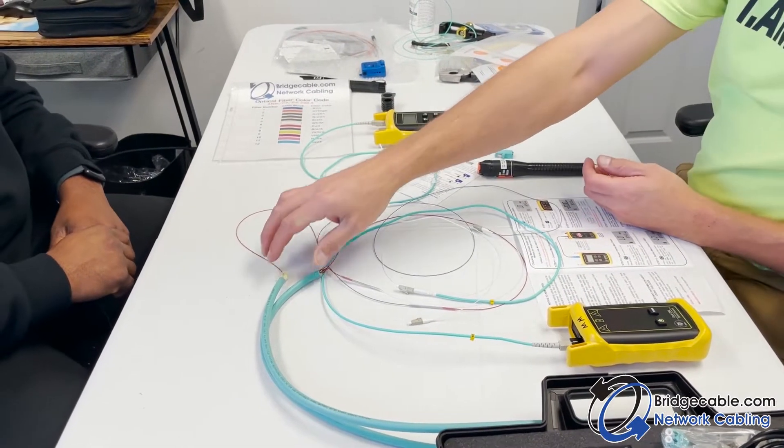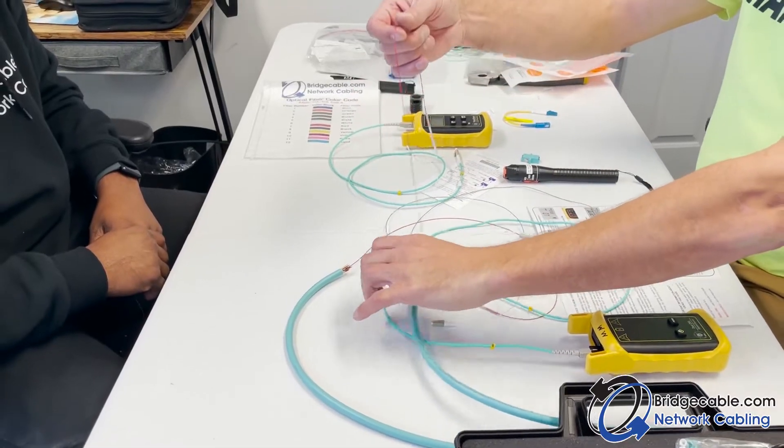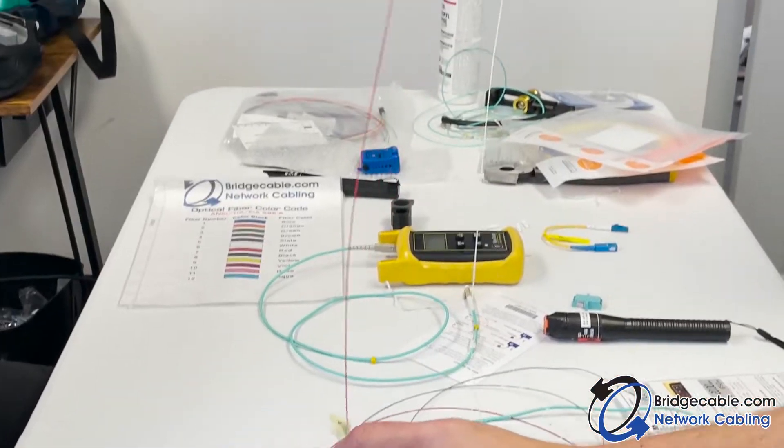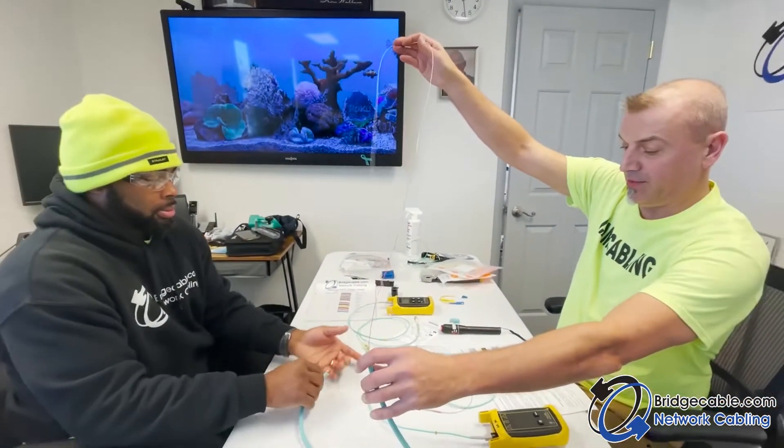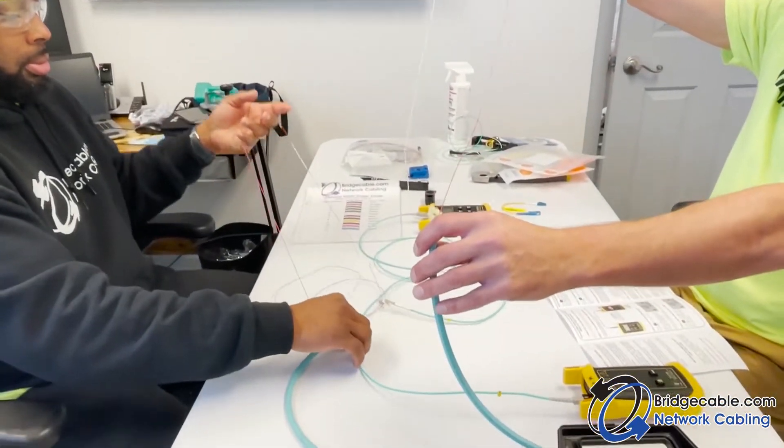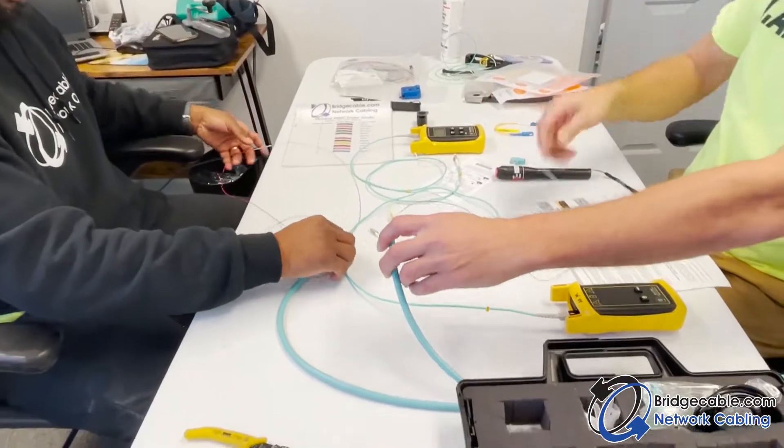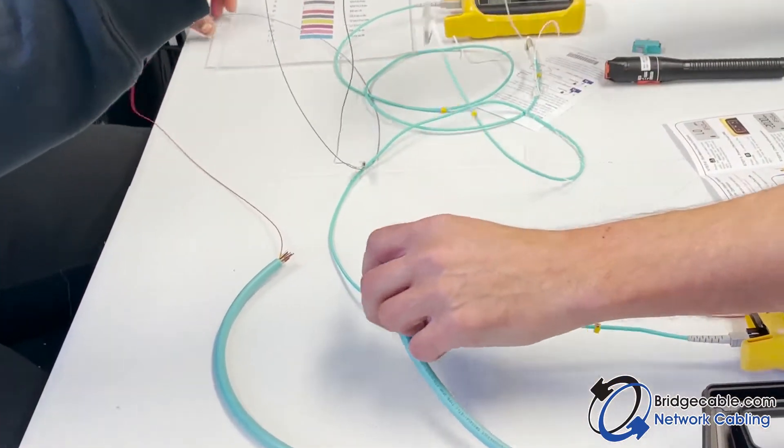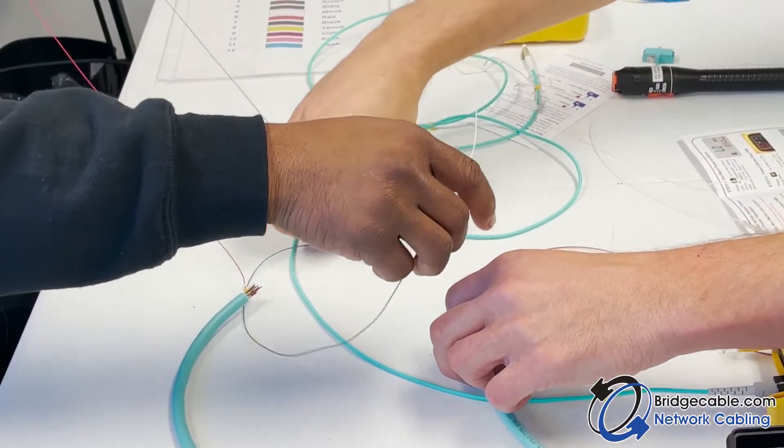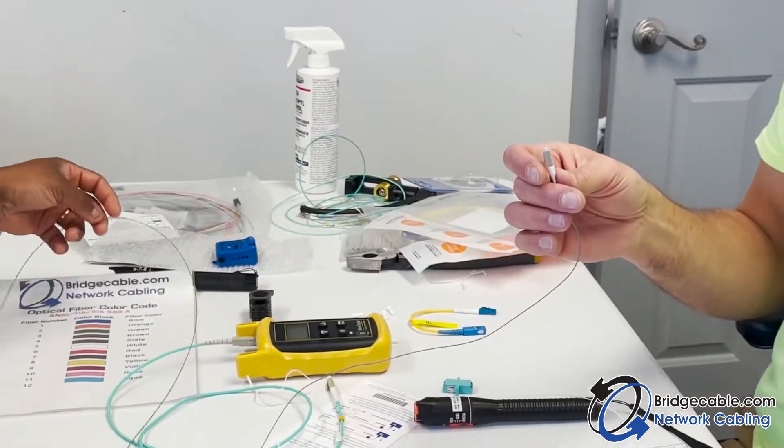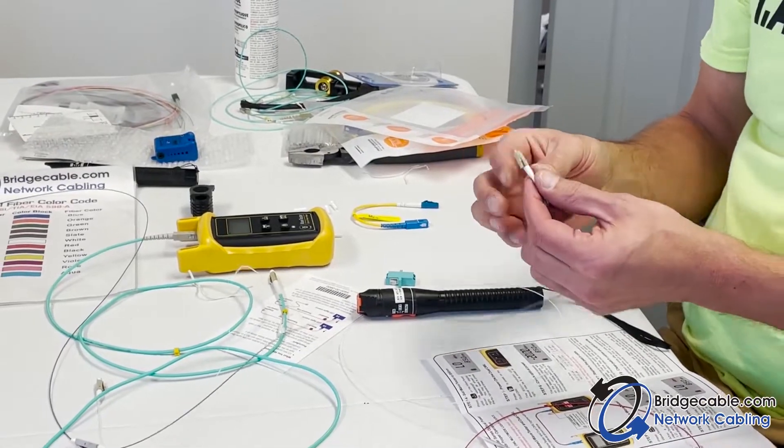Now that we've created our mock splice or mock run of a cable going across an industrial building or office, we have our two ends which we put LC pigtails on. Now we need to test them to make sure that they're good.